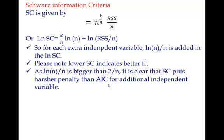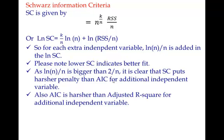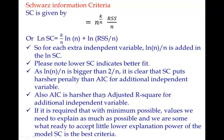And as I explained earlier, 2 by n is bigger than the equation that you get for adjusted R-square penalty term. So AIC is harsher than adjusted R-square for additional independent variables. So adjusted R-square is harsher than R-square for extra addition of independent variables. AIC is harsher than adjusted R-square, and Schwarz criteria is even harsher than AIC.